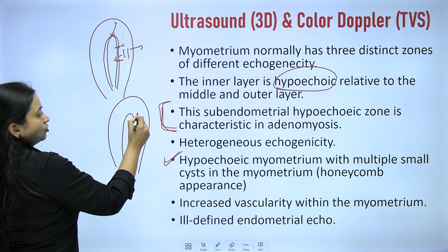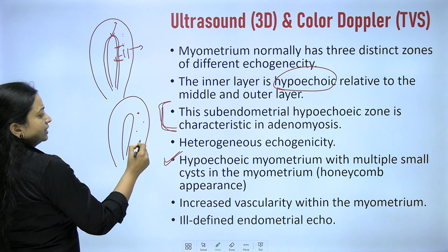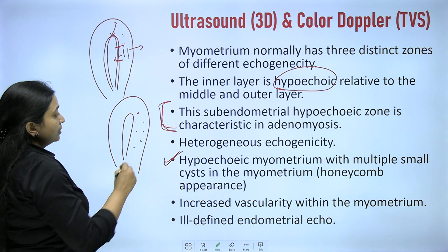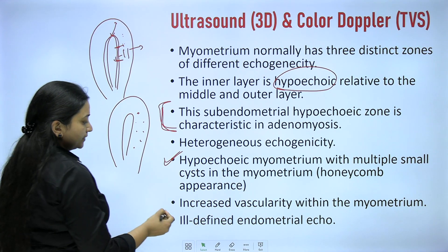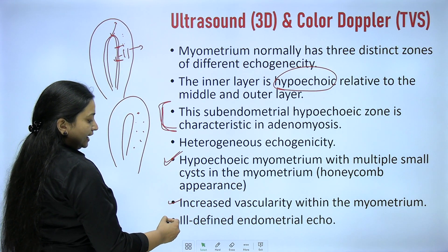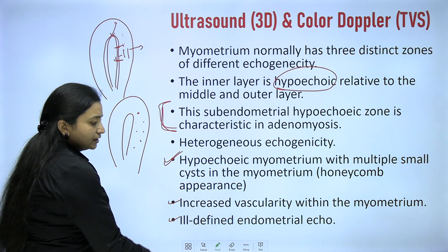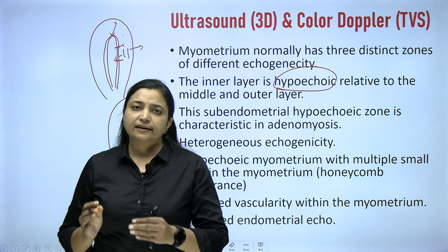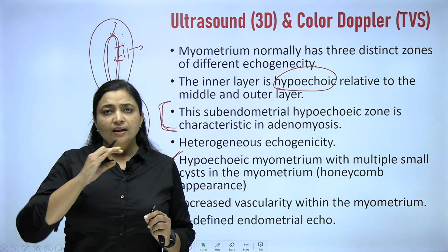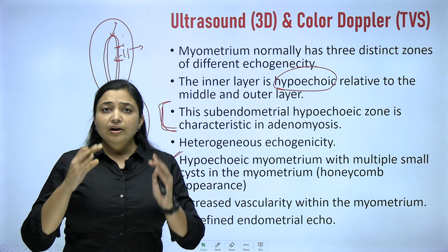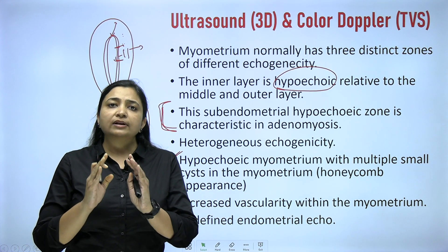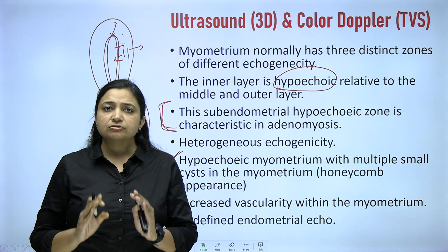The myometrium will show small cysts everywhere if it is a diffuse condition, giving a honeycomb appearance. Increased vascularity within the myometrium and an ill-defined endometrial echo are also seen. The endometrial echo moves inside the myometrium and you will find diffuse cysts with different vascularity. So, when diagnosing adenomyosis on a sonography report, you must focus on the myometrium.